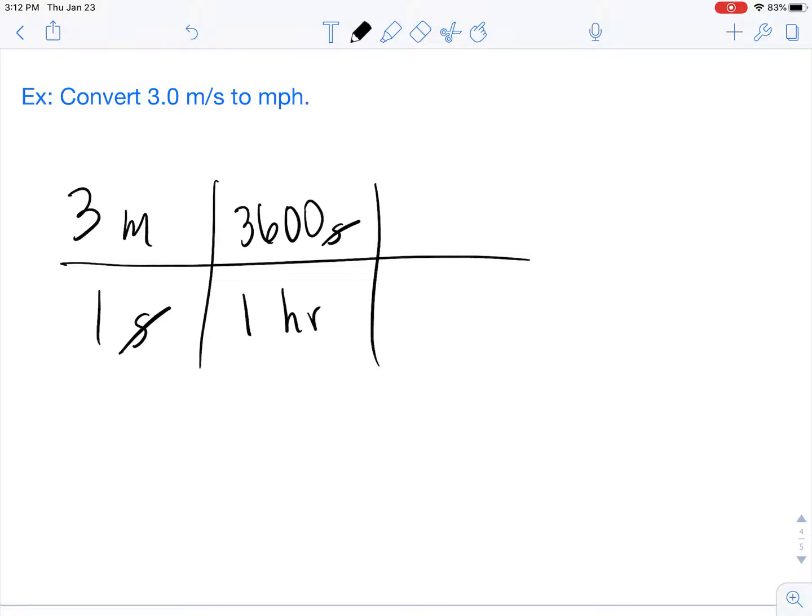Our next step is to convert meters to miles. We know that there are 1,609.3 meters in one mile. Now we can cancel out our meters. We are left with miles per hour.